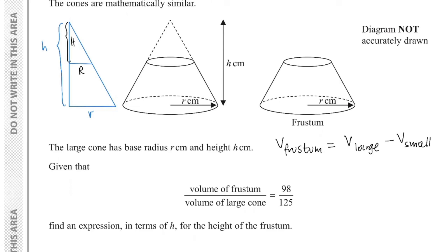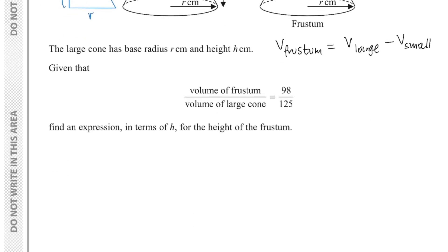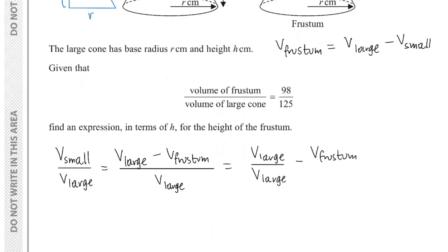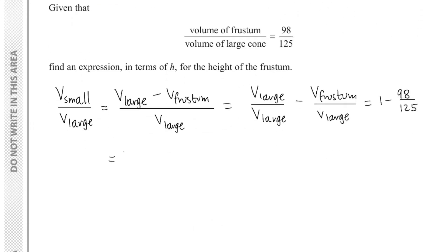Instead of considering the ratio of the volume of the frustum to the large cone, I can say that the volume of the small cone over the volume of the large cone is simply the volume of the large cone minus the volume of the frustum, all over the volume of the large cone. This equals 1 minus the volume of the frustum over the volume of the large cone, which is 1 minus 98 over 125, giving an answer of 27 over 125.